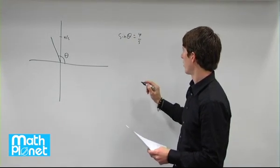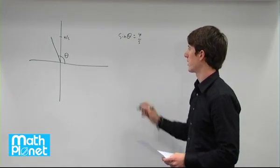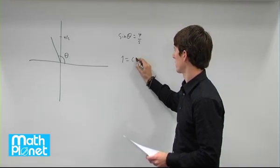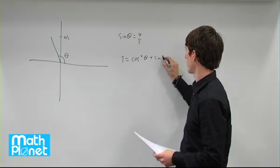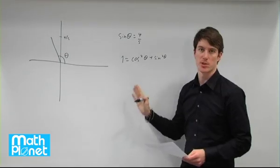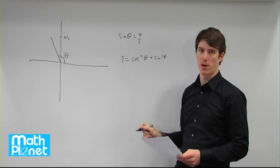So we can use the first trigonometric identity of 1 equals cosine squared theta plus sine squared theta, and this gives us a relationship between sine and cosine, and then we can just solve for cosine.